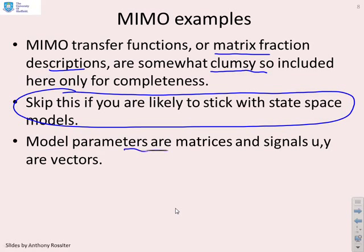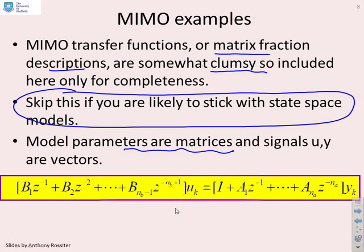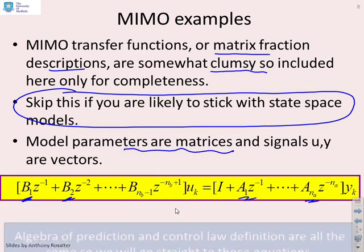So the model parameters are now matrices and the signals, the input and the output, will be vectors. So if you write a matrix fraction description, it looks similar to the SISO case. But the difference is these coefficients, B_1, B_2, and so on, A_1 up to A, they're all matrices, not scalars.